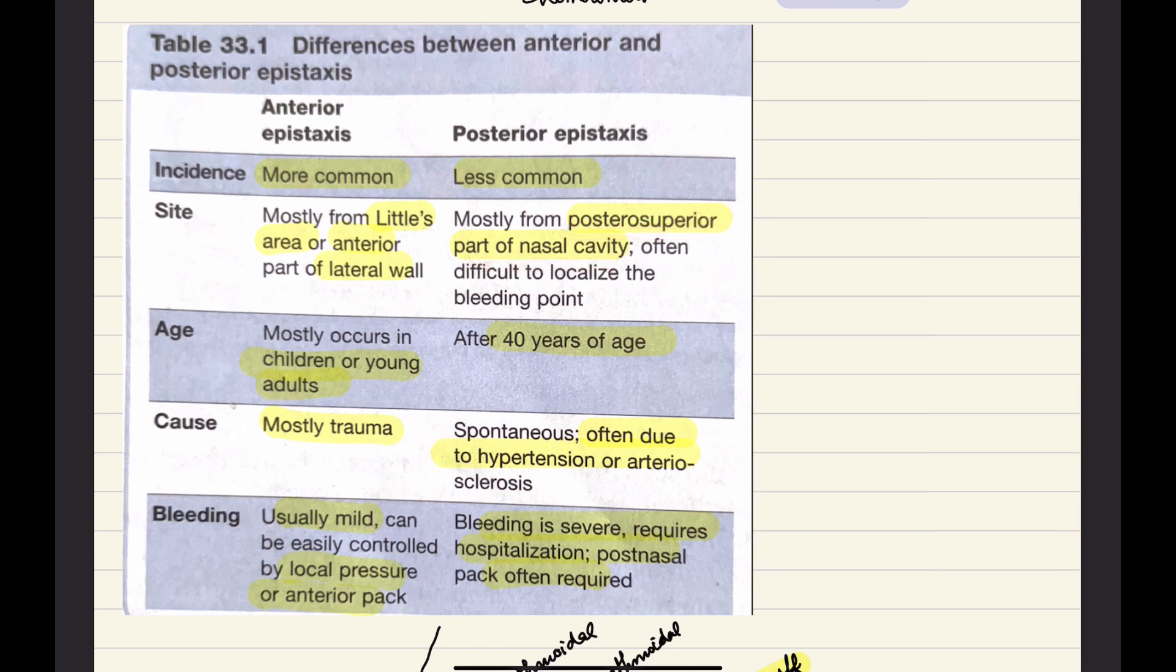Under age: anterior epistaxis occurs mostly in children or young adults, whereas posterior epistaxis is after 40 years of age. Anterior epistaxis is mostly caused by trauma, whereas posterior is often due to hypertension or arteriosclerosis.